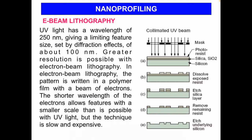E-beam lithography, on the contrary, uses UV light with a wavelength of 250 nanometers, with feature size limited by diffraction effects. Greater resolution is possible with e-beam lithography — the pattern is written in a polymer film with a beam of electrons. The shorter wavelength of the electrons allows features at a smaller scale than is possible with UV light, but the technique is slow and expensive. Every technique in nanotechnology has its own advantages and disadvantages — you always have to look at your optimization options.